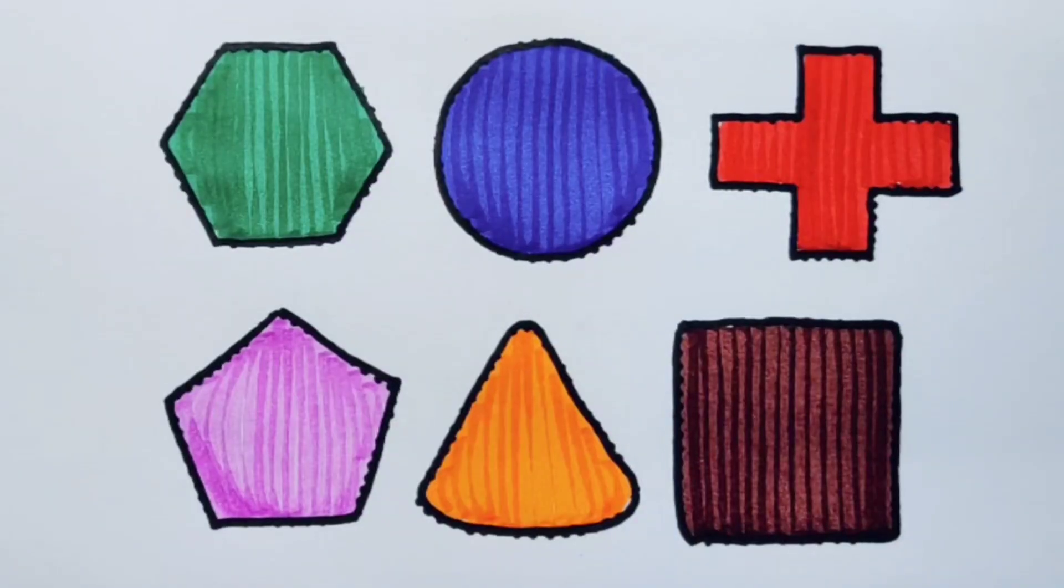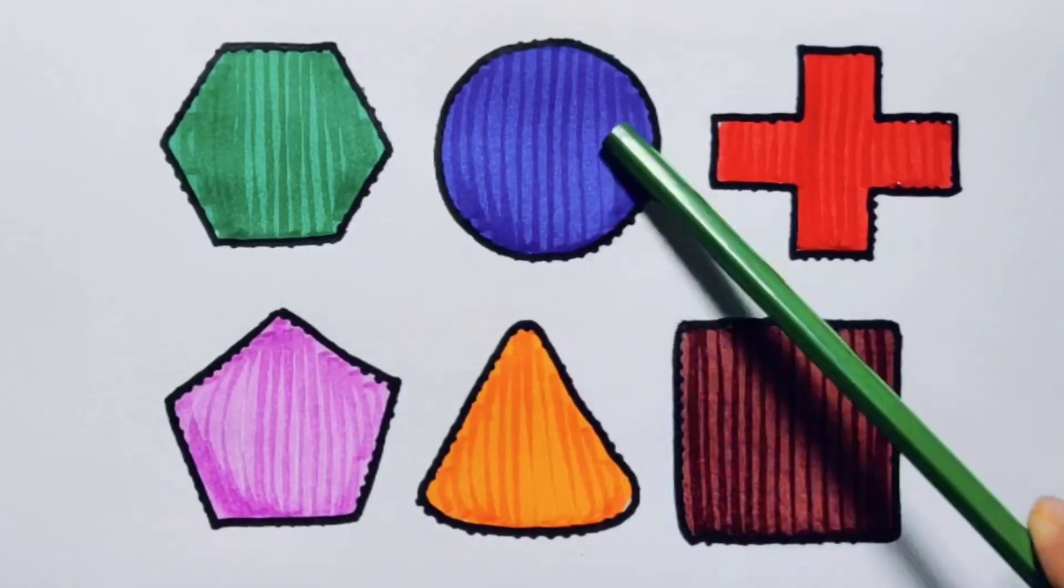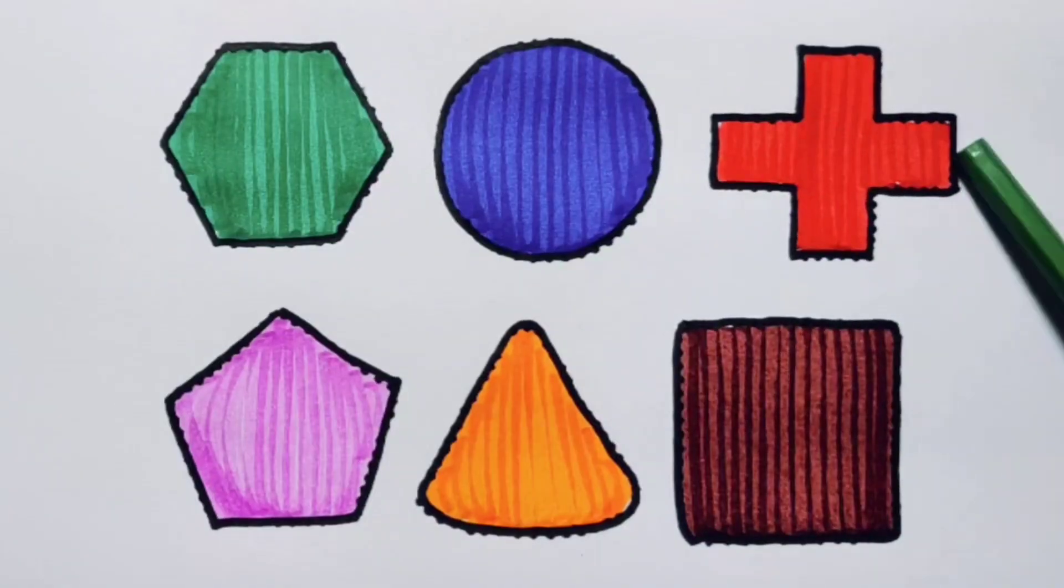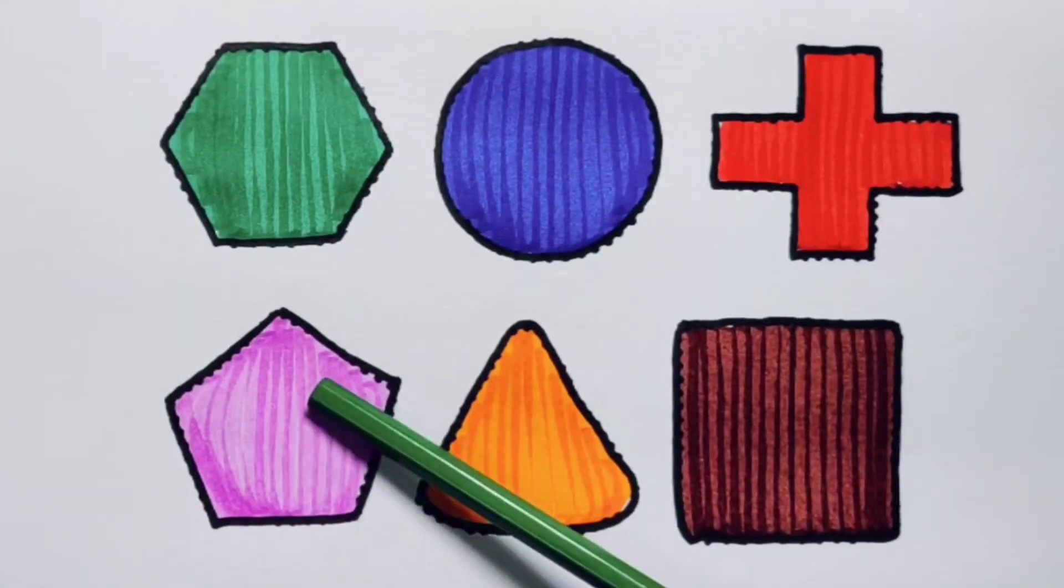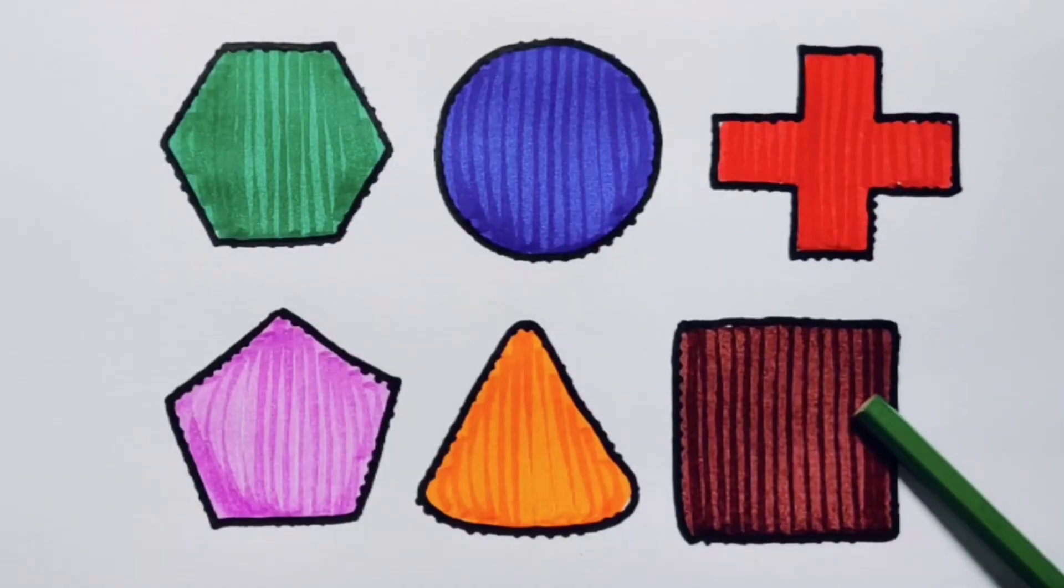What we learned: we learned green color hexagon, blue color circle, red color cross, pink color pentagon, orange color triangle, chocolate color square.